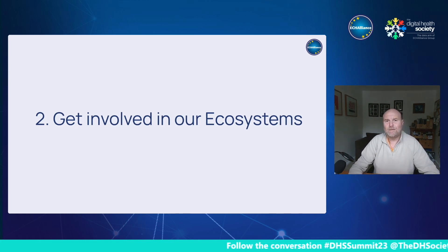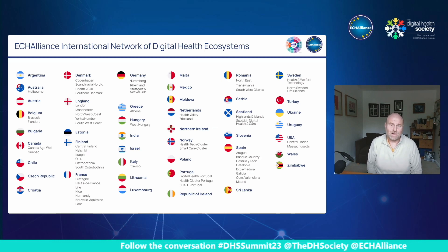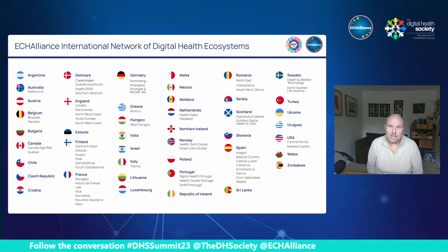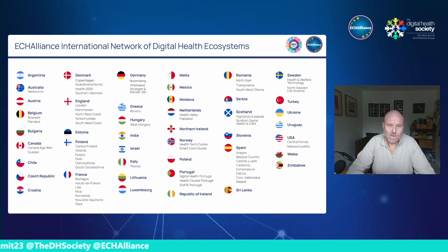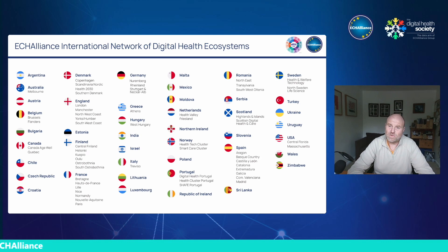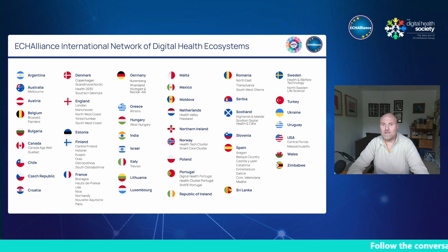Number two: get involved with our ecosystems. We have a network of global digital health ecosystems spread from Argentina through the US and Canada, across Europe, and now being built in Africa, India, Sri Lanka, and Australia. Over the last year, the ecosystem network has grown further with ecosystems joining from Ukraine, Zimbabwe, and soon from Uganda, South Africa, Tanzania, Senegal, and Zambia.